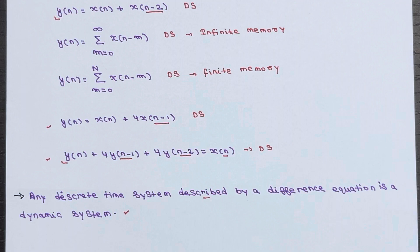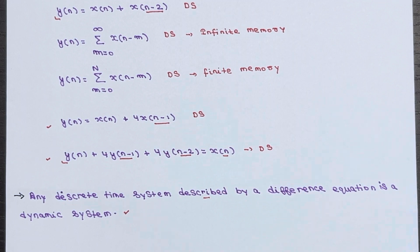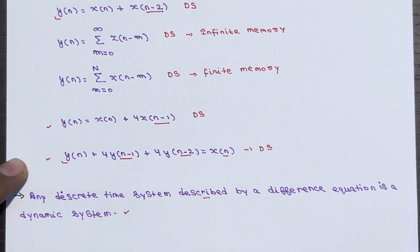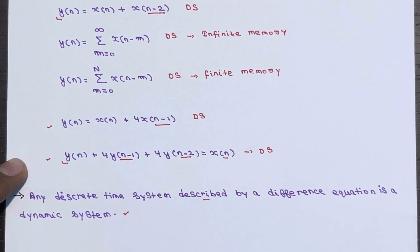Another example of a dynamic system is a summer or accumulator. This discrete time system has memory, meaning it takes into account past inputs to calculate its output — it constantly adds up previous values to create something new. Any discrete time system described by a difference equation falls into the dynamic system category. These systems are all about the relationship between inputs and outputs and can get pretty intricate.